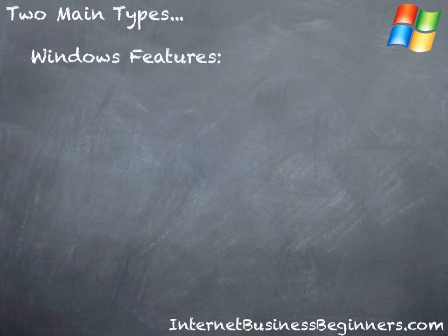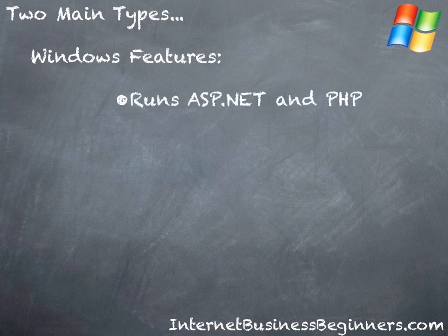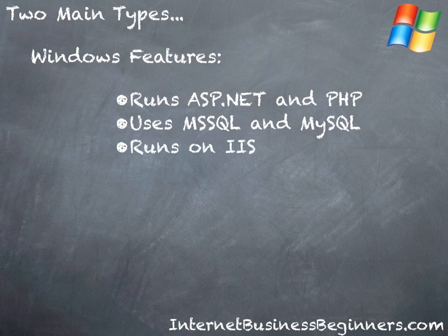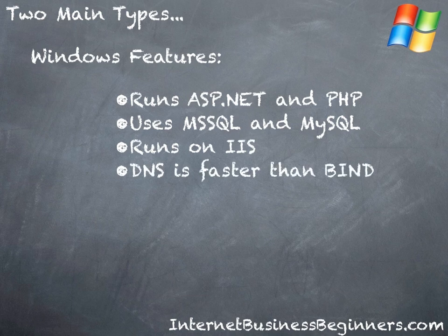With a Windows server, you have a number of features specific to Windows. For example, it will run ASP.NET and PHP. It will also store data in the Microsoft SQL Server or the MySQL Server. The HTTP server is called Internet Information Services, or IIS. The DNS system is actually faster on a Windows server than on a Linux server — Linux uses a system called Bind, while Windows uses a system called Active Directory. Active Directory pushes the information out significantly faster than Bind does.